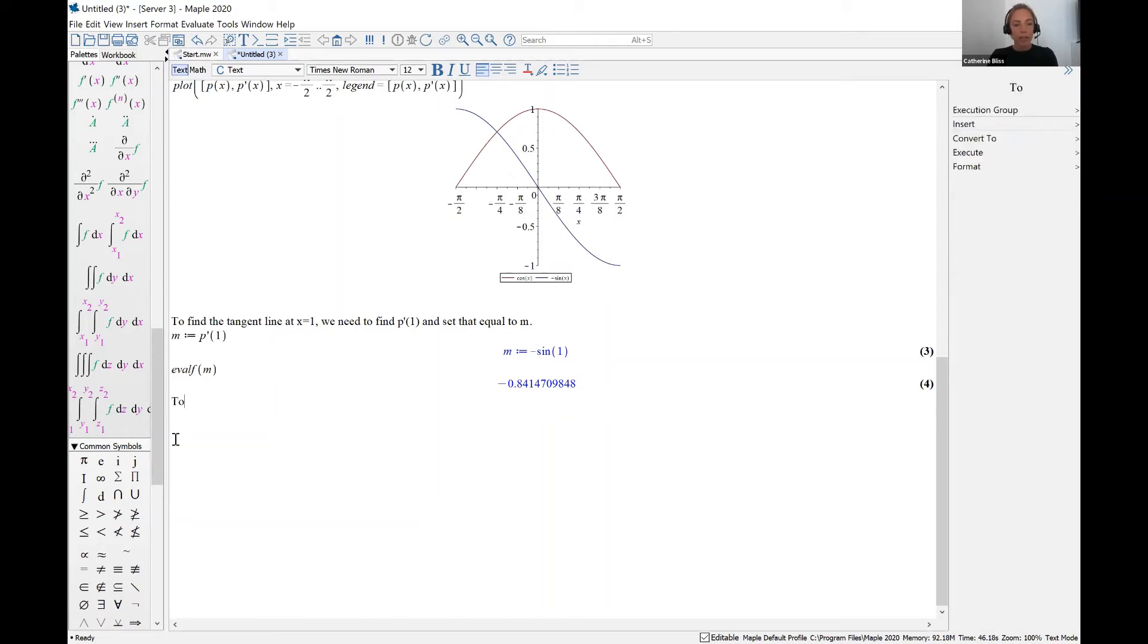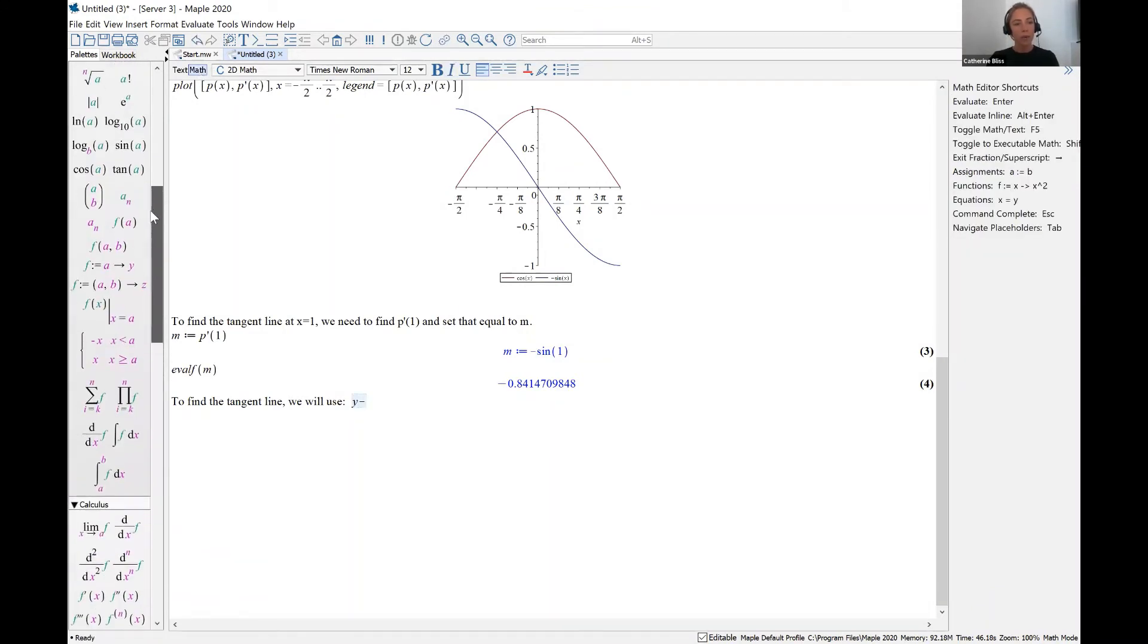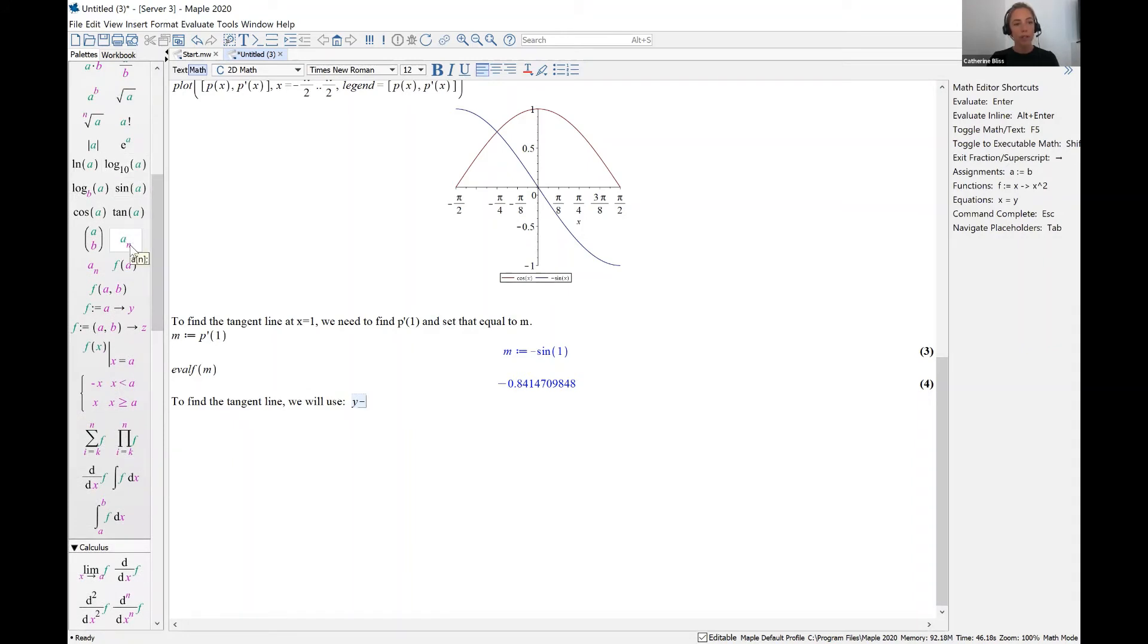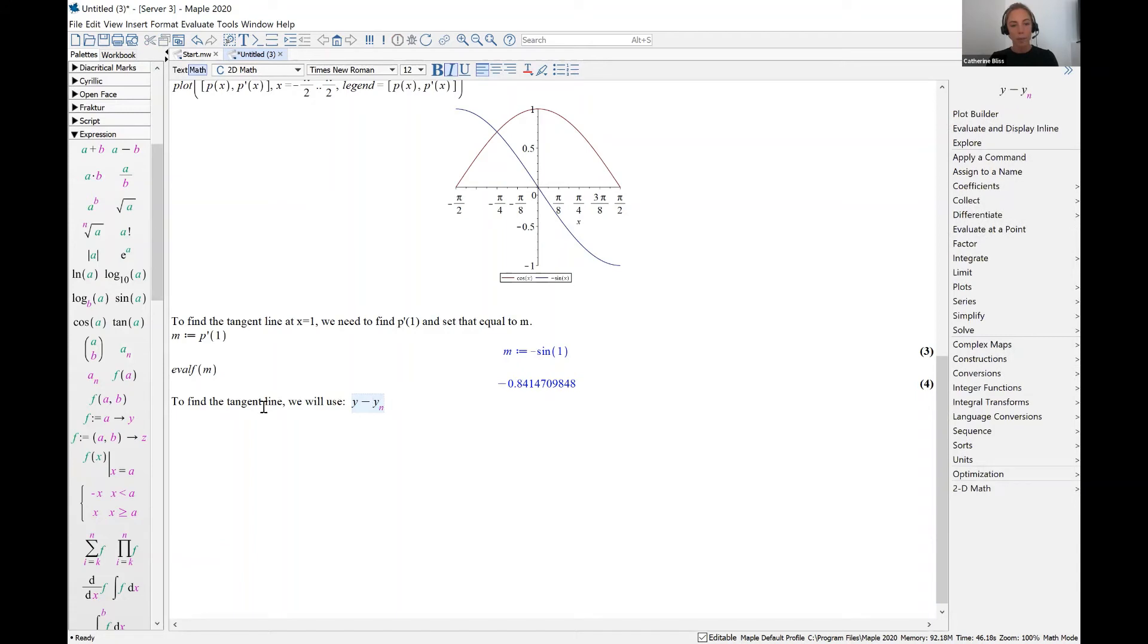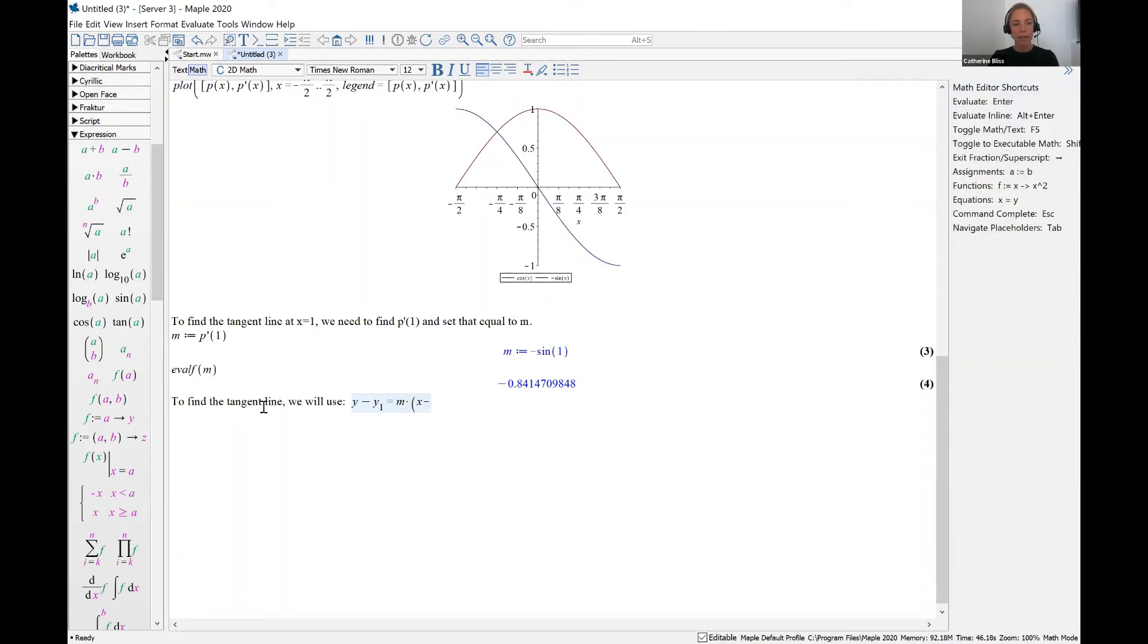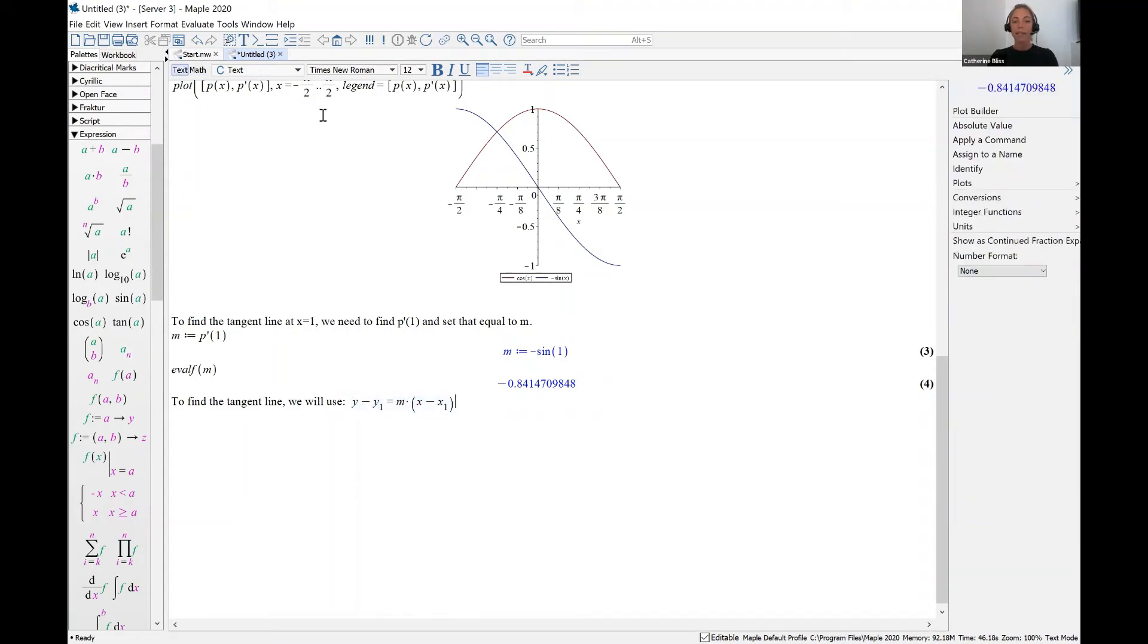Okay, so now, to find the tangent line, we will use y minus y one. So let me get in math mode. So I have some nice math notation here, y minus y sub one. And for something with subscripts, I'll go over here to the expression palette, and click on the subscript notation. And I'll type y sub one equals m times x minus x sub one. Now, it's very important that I click off of math mode, I get back to text mode, and then I can keep typing, I can put a period or head down to the next line of my work.